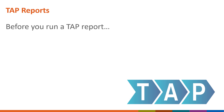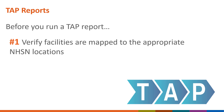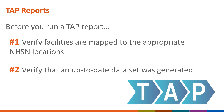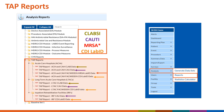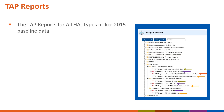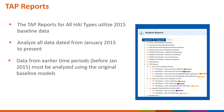Now let's talk about creating a TAP report. Prior to running a TAP report, you should verify that facilities are mapped to the appropriate NHSN locations and that an up-to-date data set was generated. Guidance on mapping NHSN locations can be found on the NHSN website. TAP reports are organized by facility type in the TAP Reports folder in the Analysis Reports section of NHSN. The TAP Reports for all HAI types utilize 2015 baseline data, so data analyzed are from January 2015 to present. Data from before 2015 must be analyzed using the original baseline models, found in the Baseline Set 1 folder directly below the TAP Reports folder.